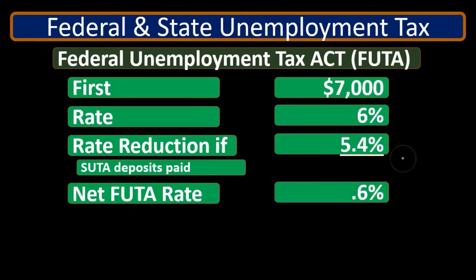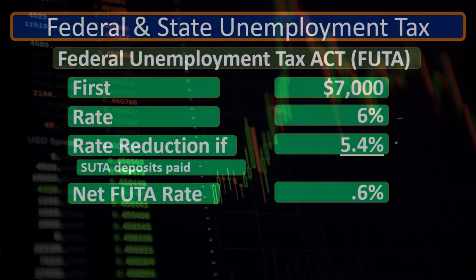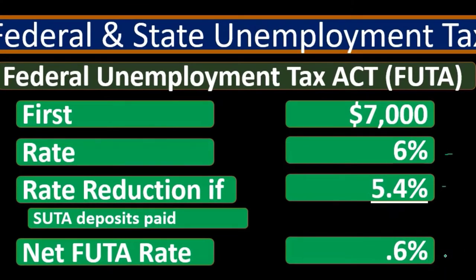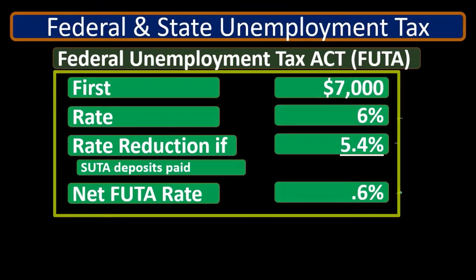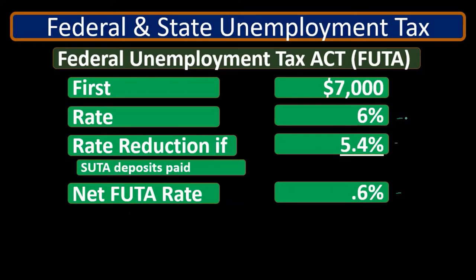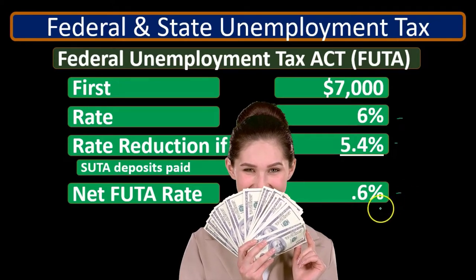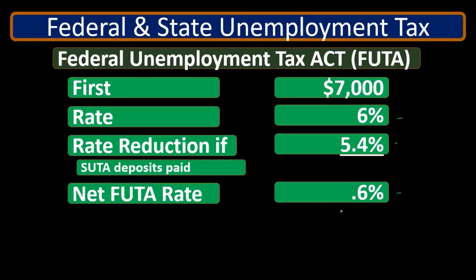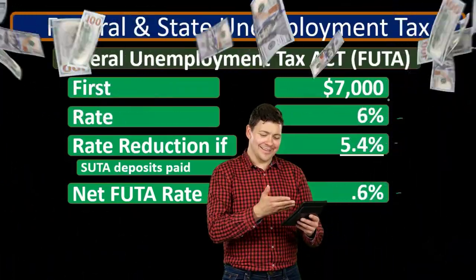So if asked what the FUTA tax rate is, technically it's six percent, but with the 5.4% deduction that almost every state qualifies for, the actual application rate is 0.6 percent. Converting to a decimal, 0.6% becomes 0.006, applied to the first $7,000 earned per employee.